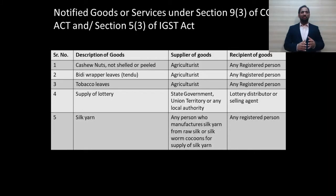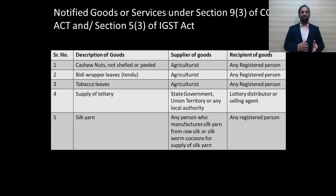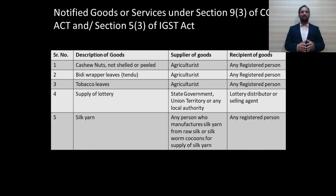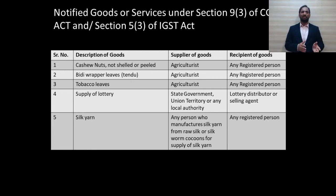For goods, as you can see on screen, there are five goods on which reverse charge is applicable. For these goods, by the supplier mentioned in the table supplying to the recipient mentioned in the table, reverse charge is applicable. So the supplier does not have to charge the GST in the invoice but the recipient will have to pay the same.